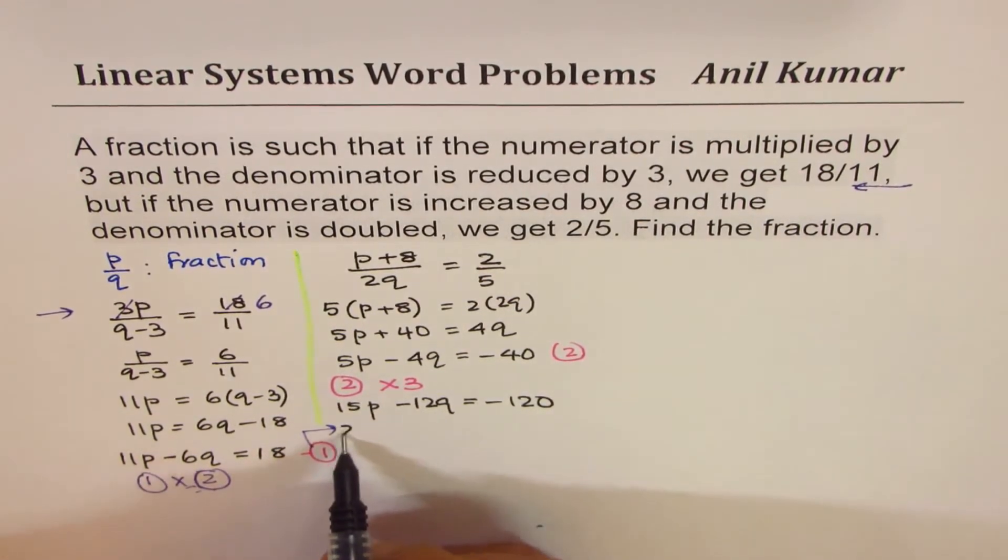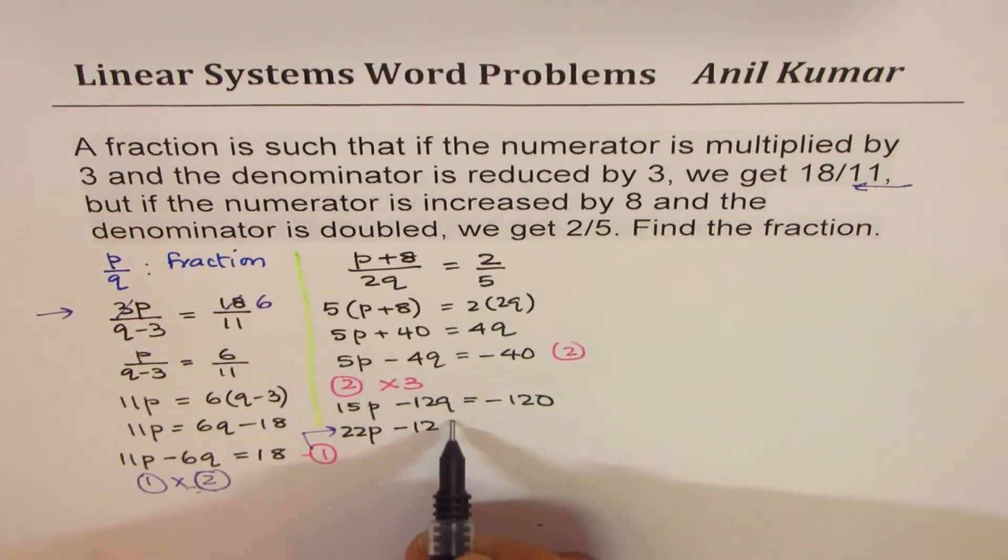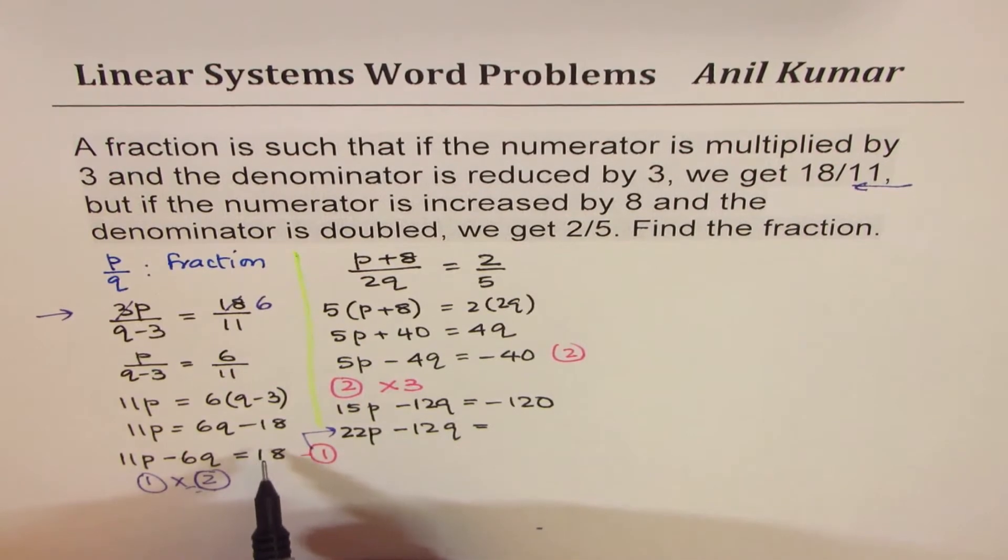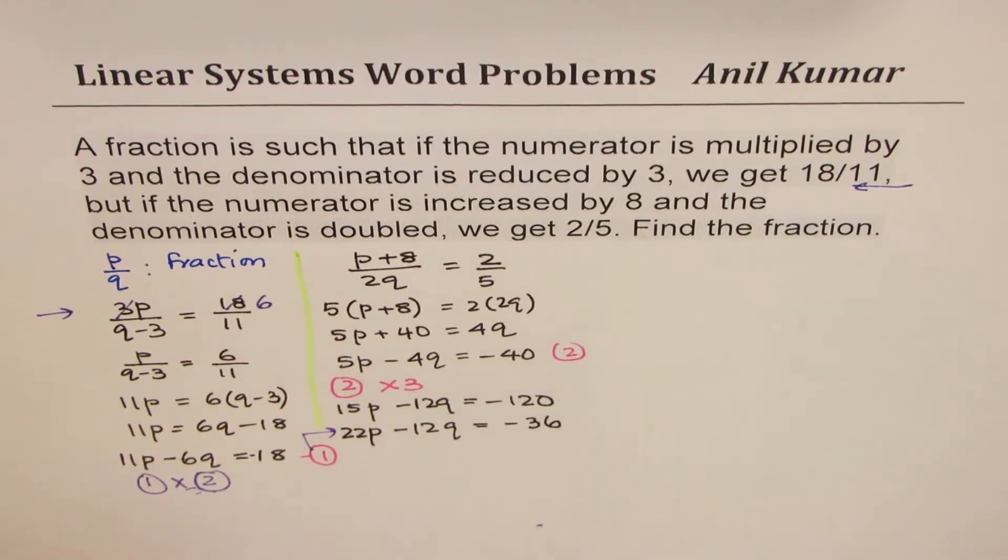Twice we get 22p, twice is 12q, twice is, this was minus, we brought it here, minus 36. That is what we get.